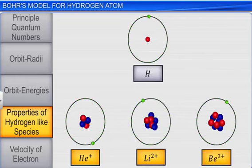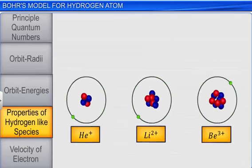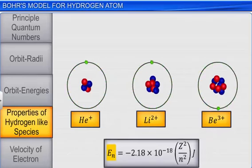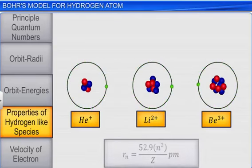The energies of the stationary states of hydrogen-like species are given by the expression En equals minus Rydberg constant multiplied by the square of atomic number divided by the square of principal quantum number. The orbit radii of these ions is given by the expression Rn equal to Bohr's radius multiplied by the square of principal quantum number divided by the atomic number.